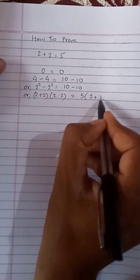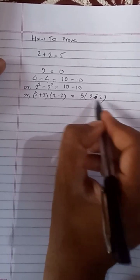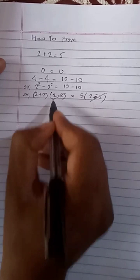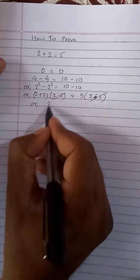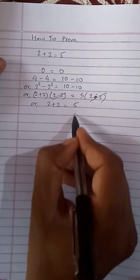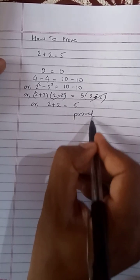Now this 2 minus 2 and 2 minus 2 is cancelled. So now 2 plus 2 is equal to 5, proved or not?